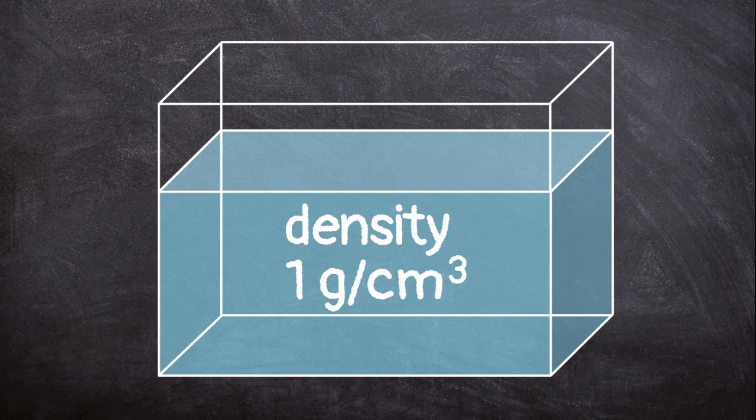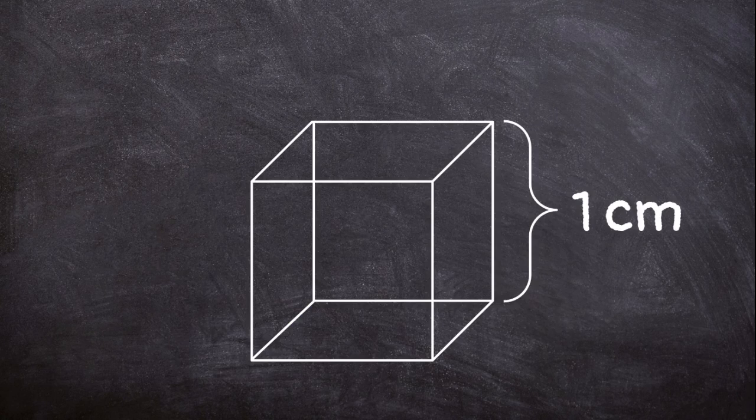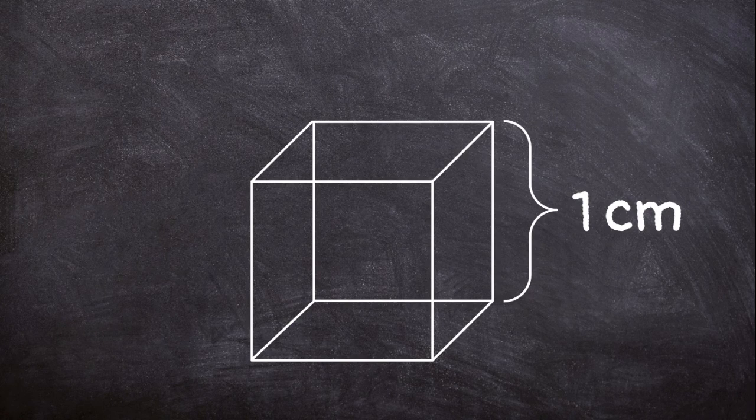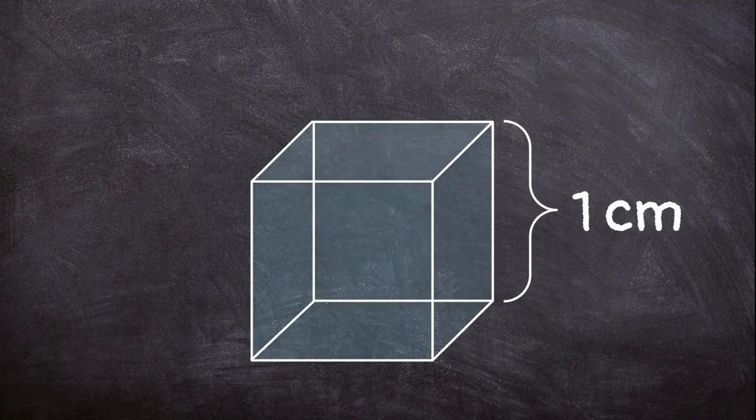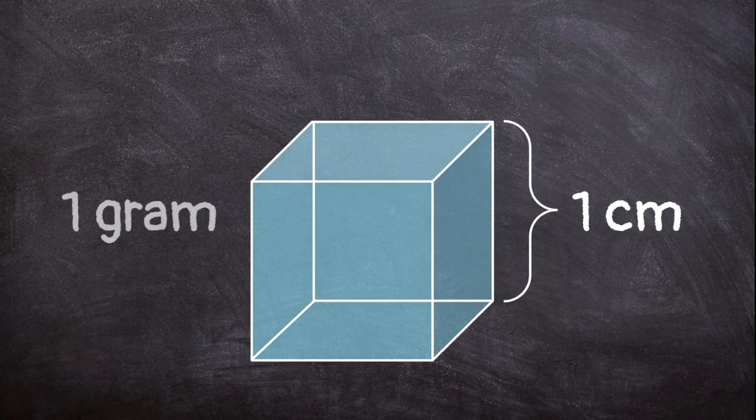The density of water is 1 gram per cubic centimeter. What is a cubic centimeter? Think of a cube made of squares with sides measuring 1 centimeter. If you filled that cube with water, it would hold 1 gram of water.